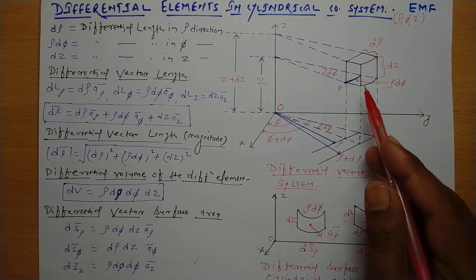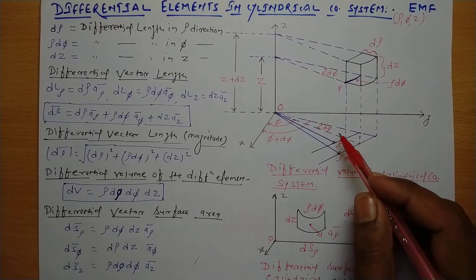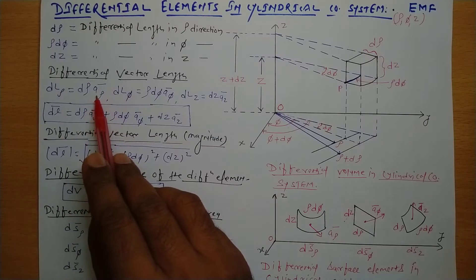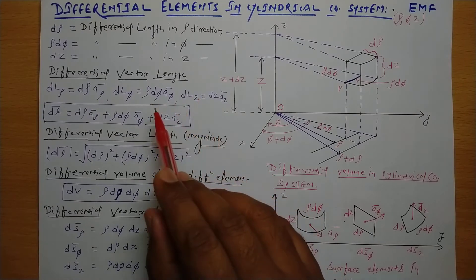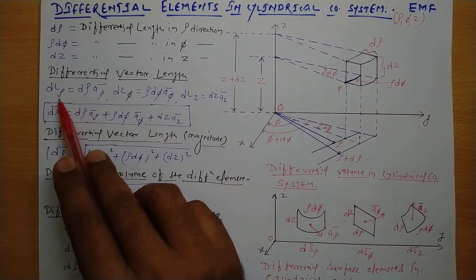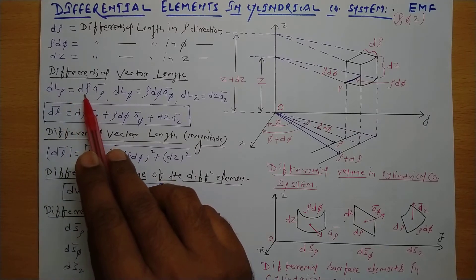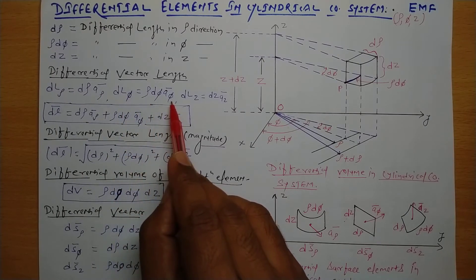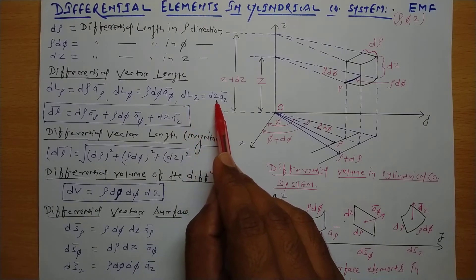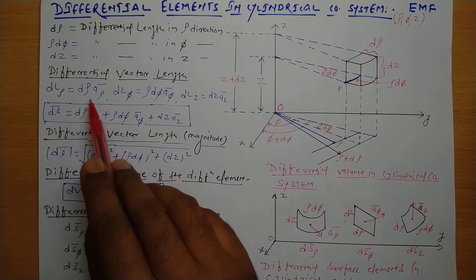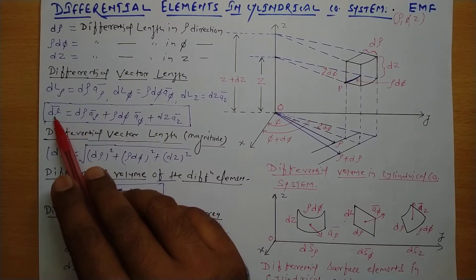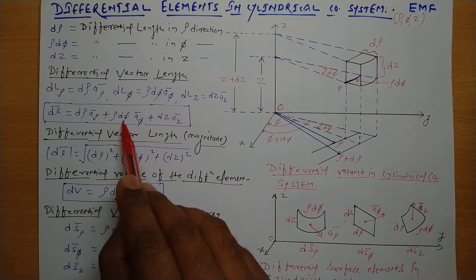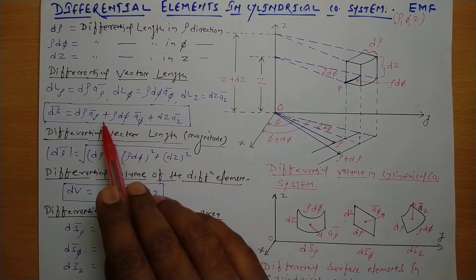Now let's talk about the differential vector length. The unit vectors in cylindrical coordinate system are a rho, a phi, and a z. The differential vector length in the rho direction is d rho times a rho. In the phi direction it is rho d phi times a phi, and in the z direction it is dz times a z. So the resultant differential vector length is given as d rho a rho plus rho d phi a phi plus dz a z.